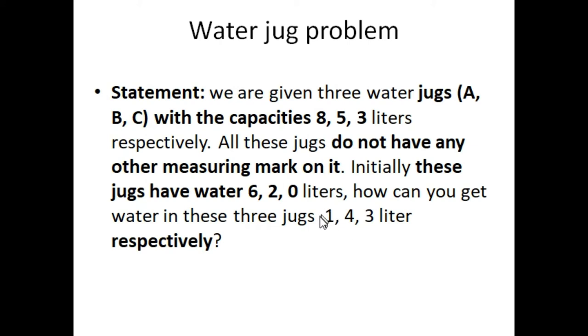How can you get the water in these three jugs with the final state one, four, three? In the first jug there will be one liter, four liters in jug B, and three liters of water in jug C. Just pause this video and calculate and move towards the solution.